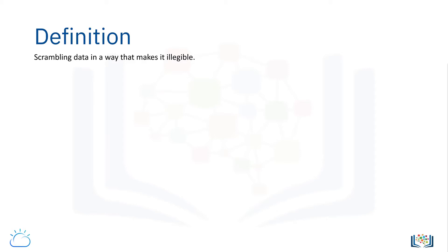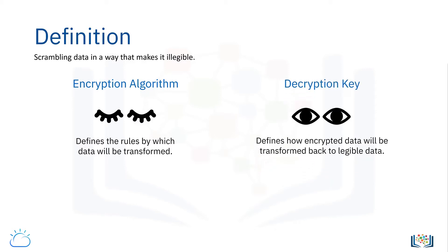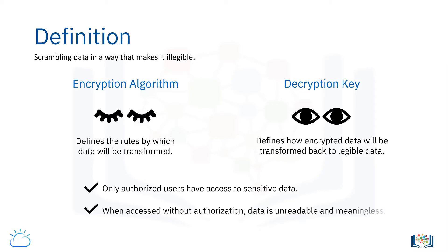Encryption is defined as scrambling data in a way that makes it illegible. There are two parts to an encryption system: the encryption algorithm and the decryption key. The encryption algorithm defines the rules by which data will be transformed so that it becomes illegible, and the decryption key defines how the encrypted data will be transformed back to legible data. Encryption ensures that only authorized users have access to sensitive data and, when accessed or intercepted without authorization, data is unreadable and meaningless.